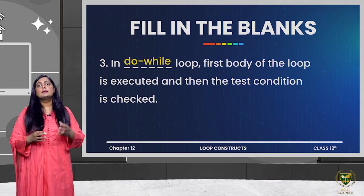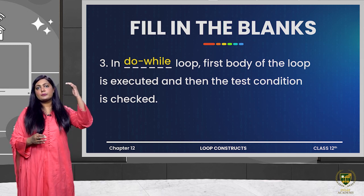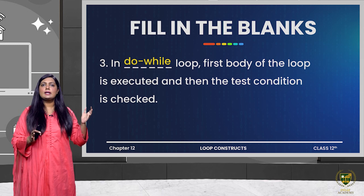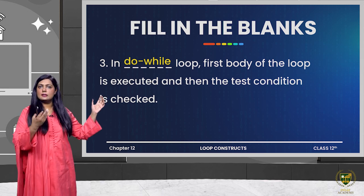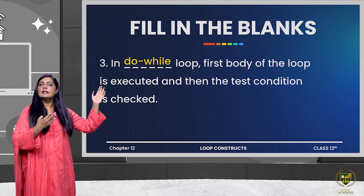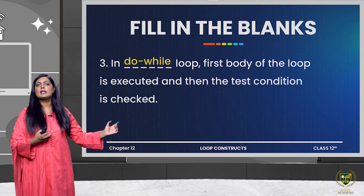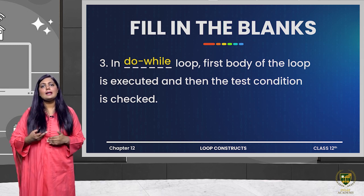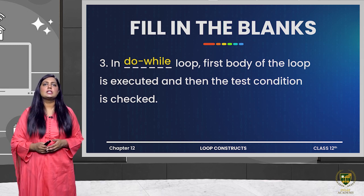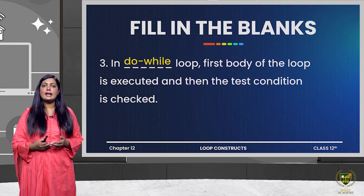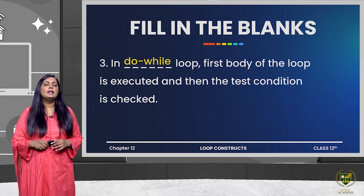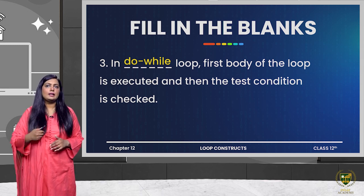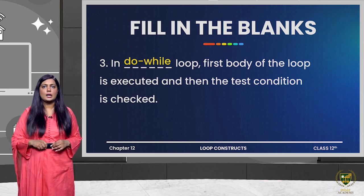In the do-while loop, the condition is checked at the end. In contrast, for the while loop, the condition is checked first and then execution of the program starts.